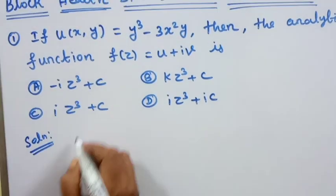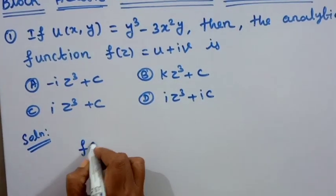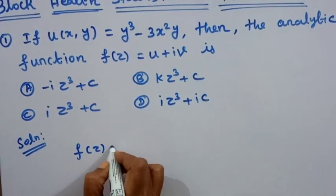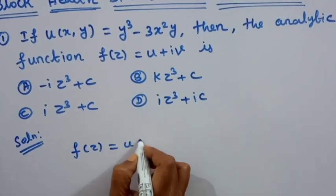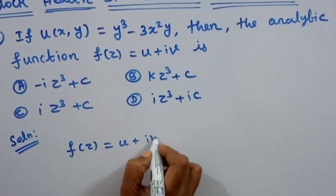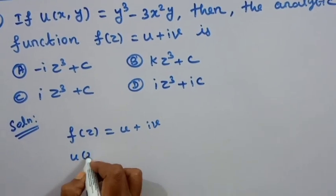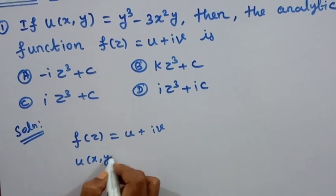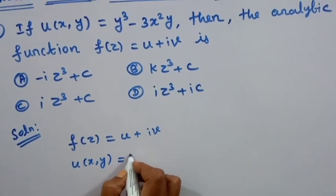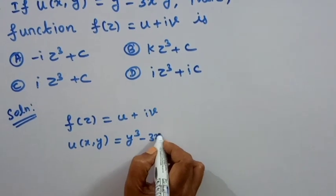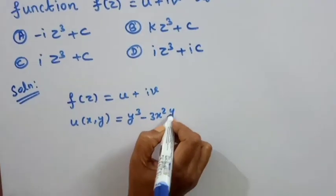Now, f of z equals u plus iv. We call u of x, y equal to y cube minus 3x square y.